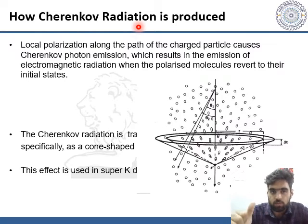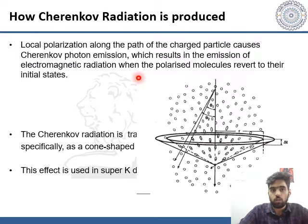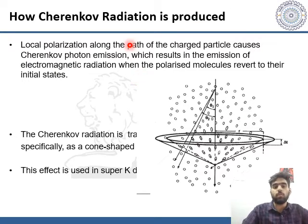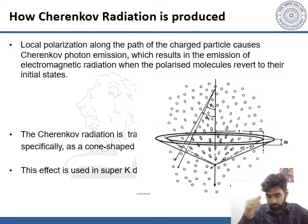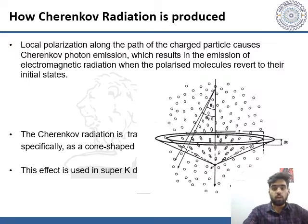This is a depiction of the production of Cherenkov radiation in a dispersive medium and the resulting wavefront expansion. As the wavefront expands, the excitation pulse occurs on a time scale that is small in comparison to the fluorescence decay. This phenomenon is well used in the Super Kamiokande detector to detect muons and neutrinos.